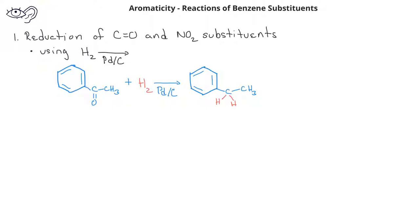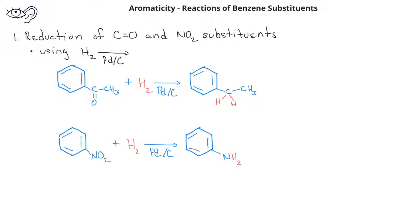Another reduction reaction involves changing a nitro substituent to an amine substituent, or an NH2 group on the benzene ring. We still use H2 in the presence of palladium, and in this case nitrobenzene is changed to aniline.